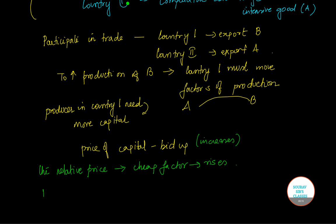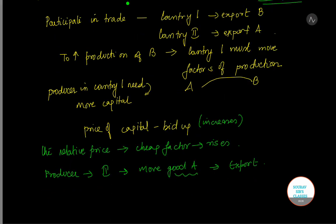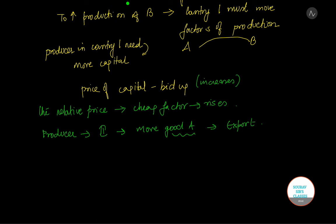Similarly, the producers in country 2 start to produce more of good A in order to export it. This is a labor intensive good, so as more of it is produced, more labor will be required, so more labor is needed and the relative price of labor goes up.